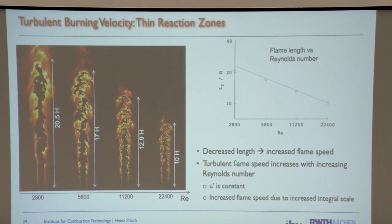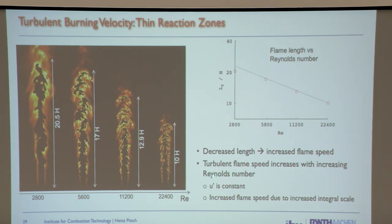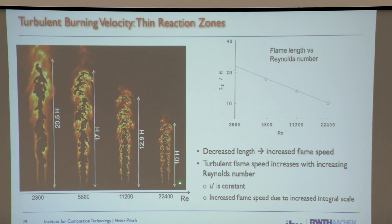In that limit, flame speed is proportional to the square root of the Reynolds number. In this particular DNS case, u' was held constant but the slot nozzle width was increased for higher Reynolds number, making the length scales larger, which then causes the flame speed to be faster.